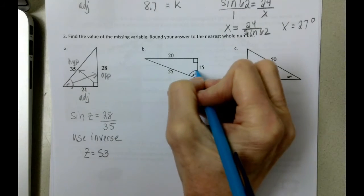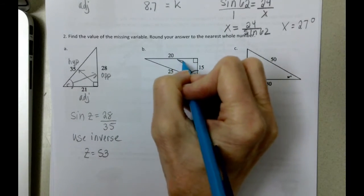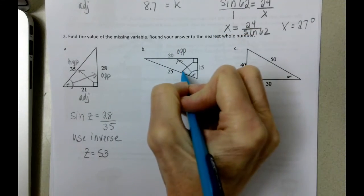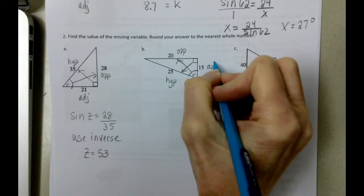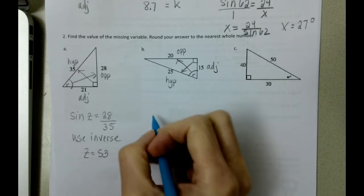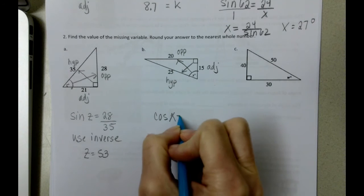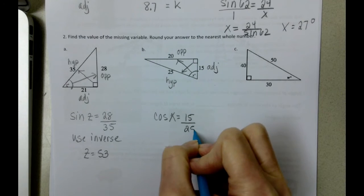Letter B. Here's our angle. We're going to label. There's the opposite. Across from the right angle is the hypotenuse, which means that this is the adjacent. Again, because we know all three sides, you can use any function. I'm going to use cosine this time just to mix it up. Cosine is the adjacent length divided by the hypotenuse.